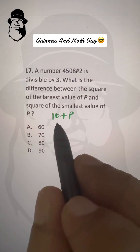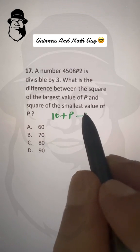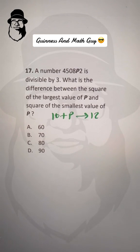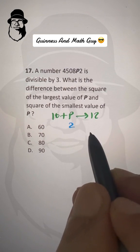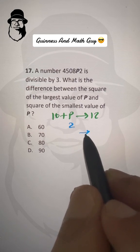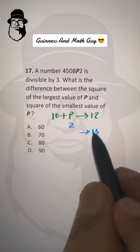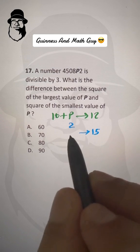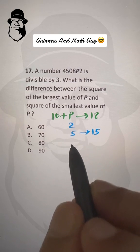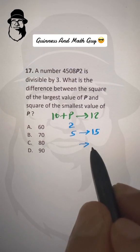Now, 10 plus what is the next number that is divisible by 3? That is 12. So the value of P can be 2. Or the next number after 12 is 15, which is divisible by 3. So 10 plus what is 15? That is 5. So P can be 5.